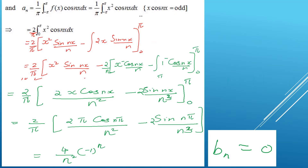For aₙ, the equation is aₙ = (1/π) × integral from minus pi to plus pi of x² cos(nx) dx. Since x² is even, this becomes (2/π) × integral from 0 to π of x² cos(nx) dx. We apply the product rule (integration by parts): first function x² times integral of cos(nx), which is sin(nx)/n, minus the integral of the derivative of x² times sin(nx)/n.